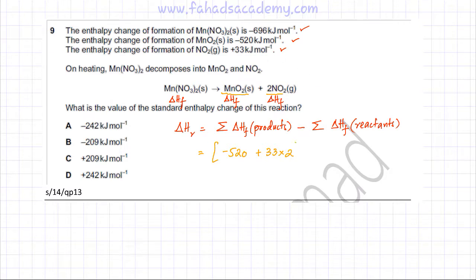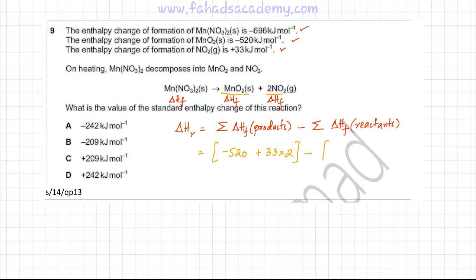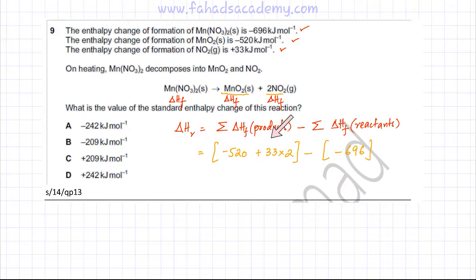These are the products. Now we subtract the sum of the reactants. There is only one reactant, which is magnesium nitrate. The enthalpy change of formation of magnesium nitrate is given as minus 696 kJ/mol. So the calculation is products minus reactants.